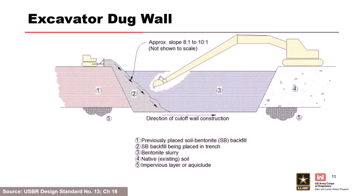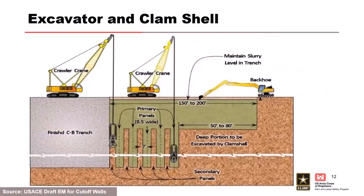The excavator periodically grabs the toe of the backfill slope to push out settled sediment — the backfill is 15–20 lb/ft³ heavier than the slurry and pushes it along. For greater depths, a clamshell on a crane can go much deeper than an excavator (which tops out around 100 feet) because it isn't limited by hydraulic reach. Most clamshells rely on the weight of the frame to dig through soil and sediments. A lead-in trench is done with a backhoe, then the clamshell takes over. For cement-bentonite, the slurry hardens in place to form the barrier.